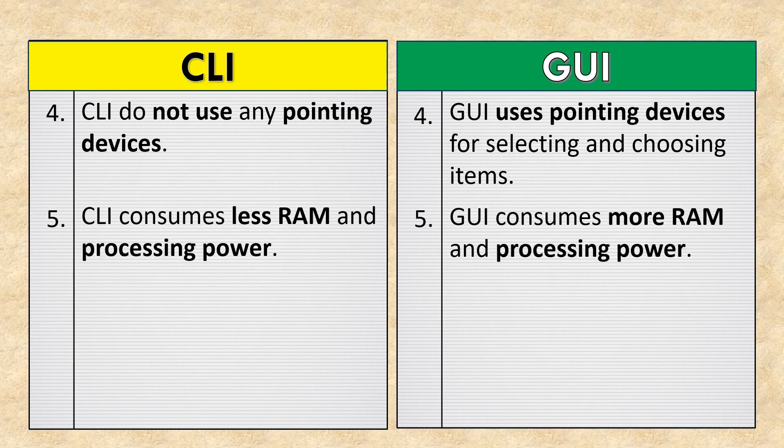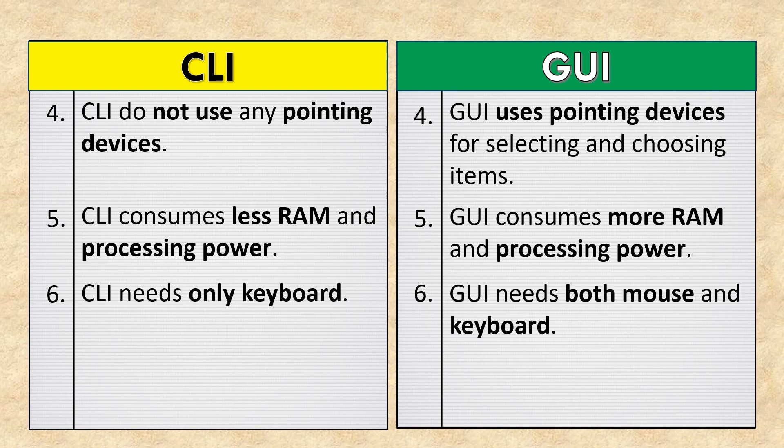CLI consumes less RAM and processing power, while GUI consumes more RAM and processing power. CLI needs only a keyboard, whereas GUI needs both mouse and keyboard.